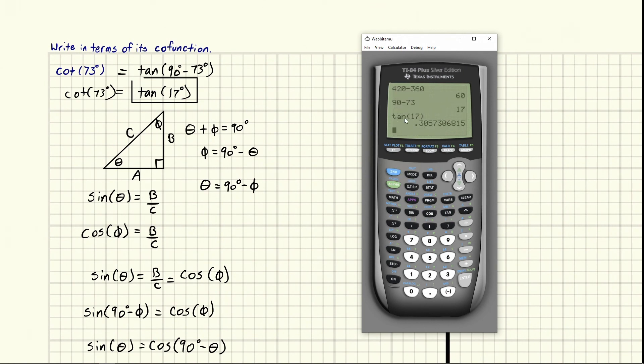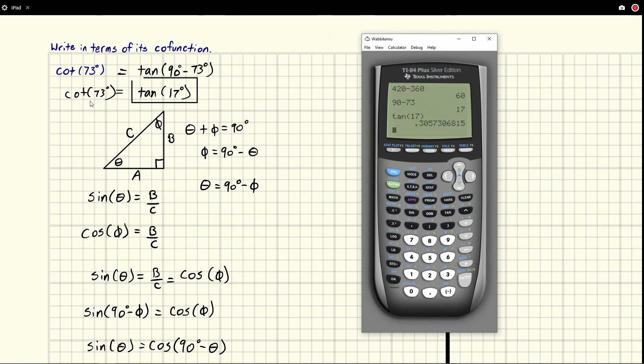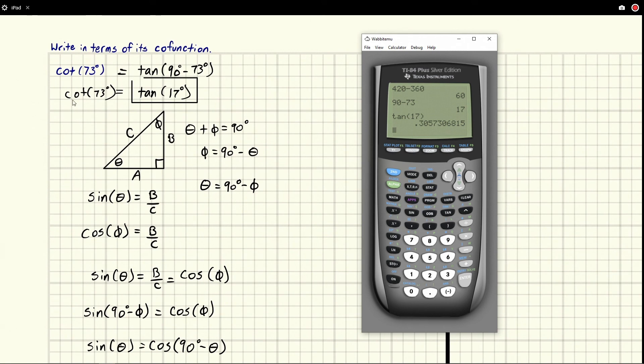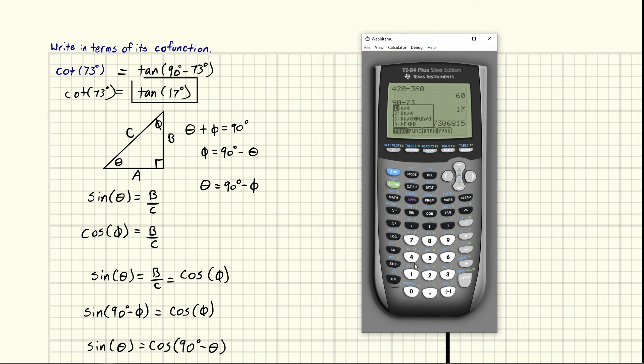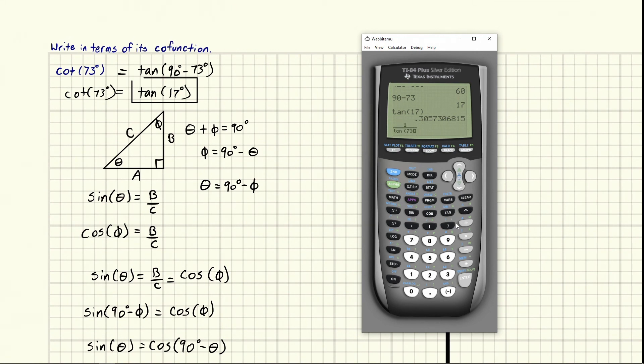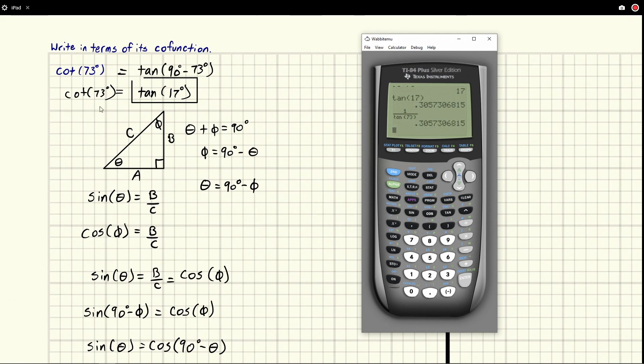So now I want to check cotangent of 73 degrees. Now there's no cotangent button on here, but we can use reciprocal identity. So we could do one over tangent of 73 degrees. We should get the same thing, and we do. And so we could see here, this is how you would write it as a co-function pair.